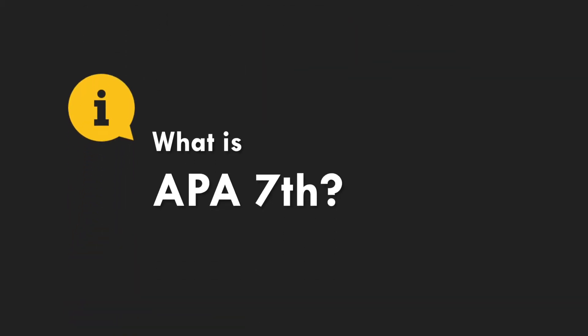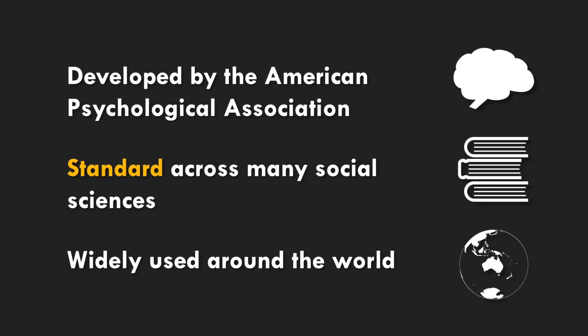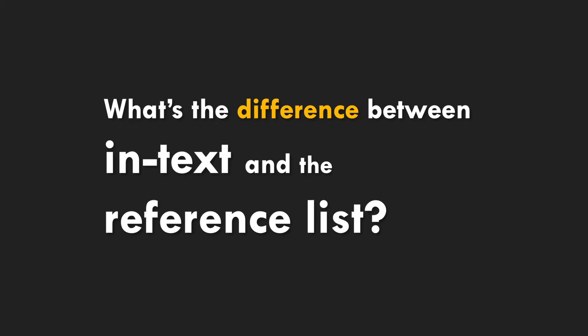So what is APA 7th? APA 7th is a referencing style developed by the American Psychological Association. It's a standard across many social sciences and is widely used around the world across a range of disciplines. APA style is built into two different parts: the in-text reference and the reference list itself.